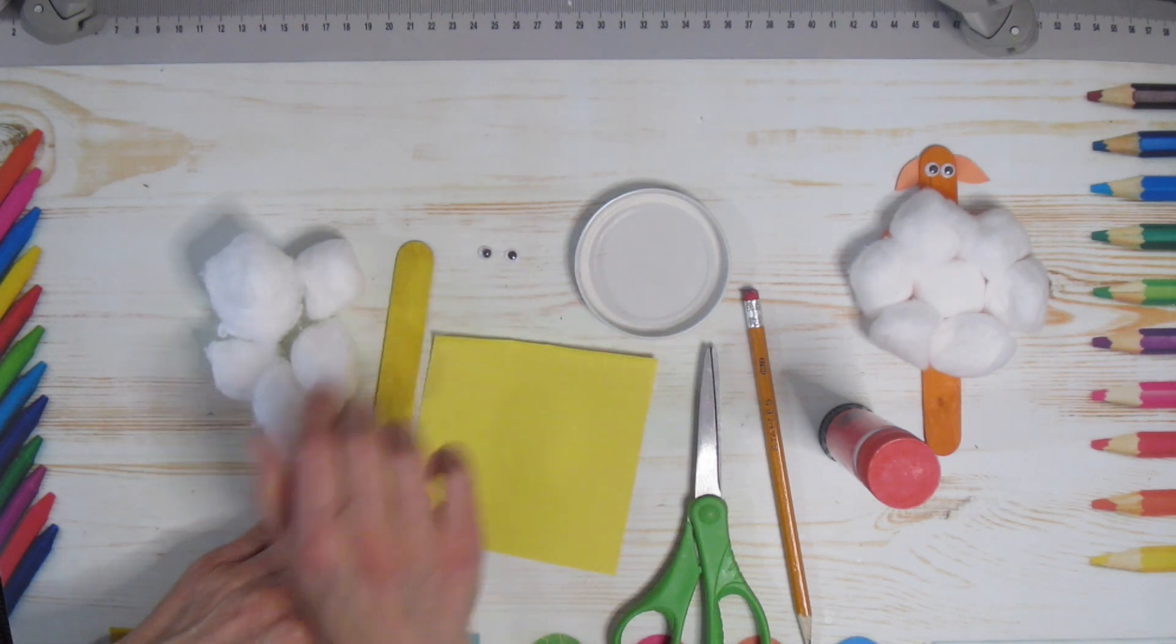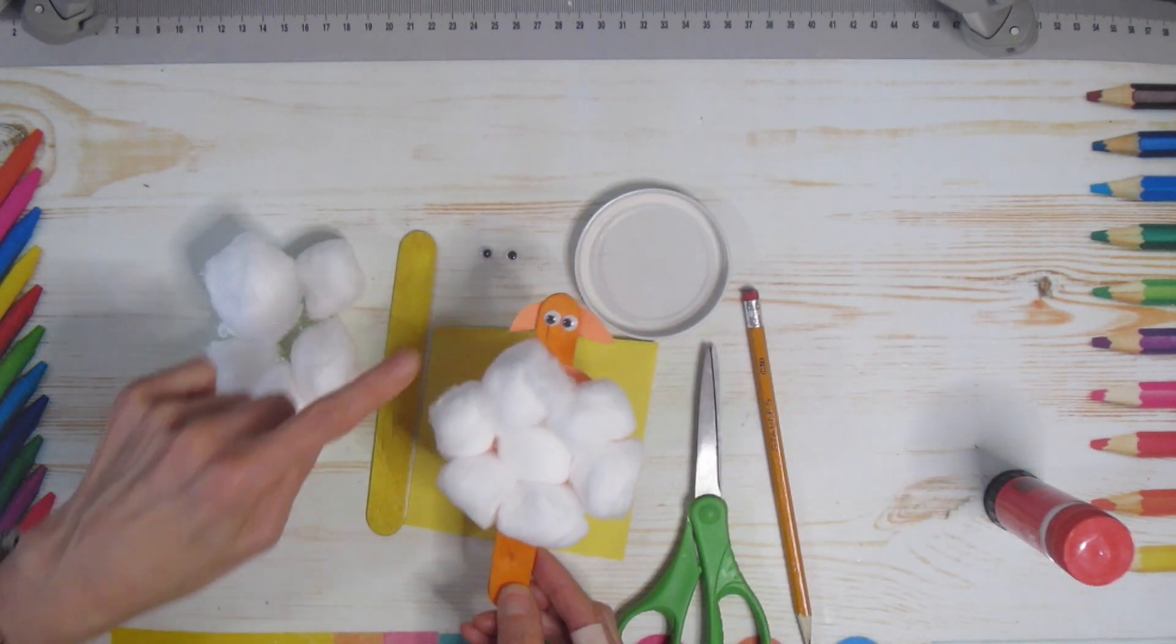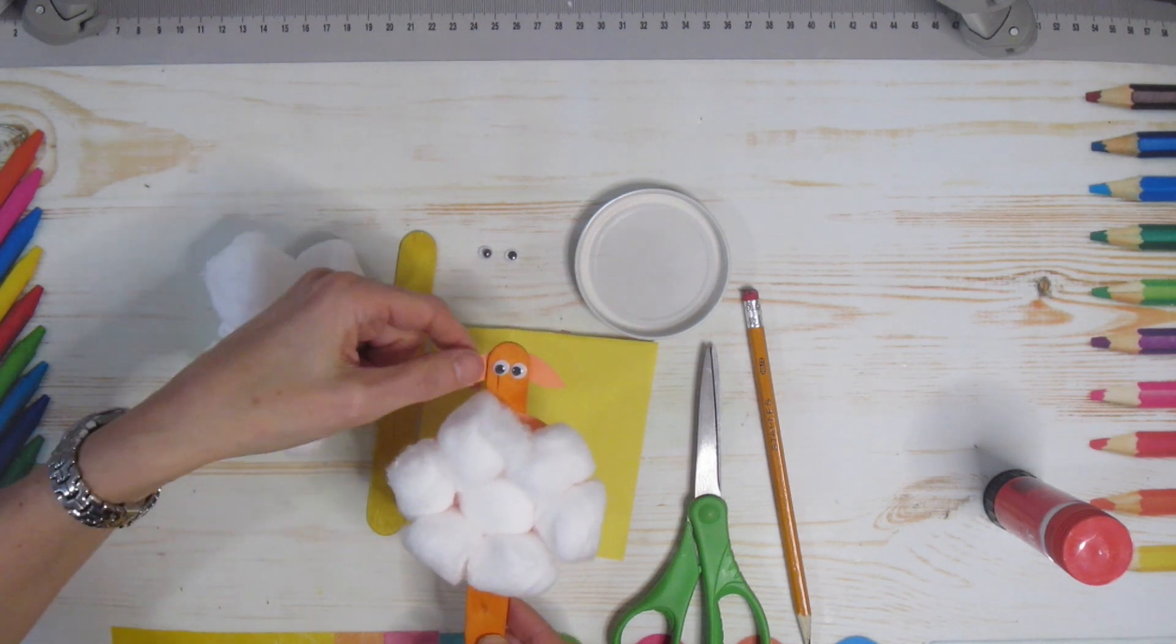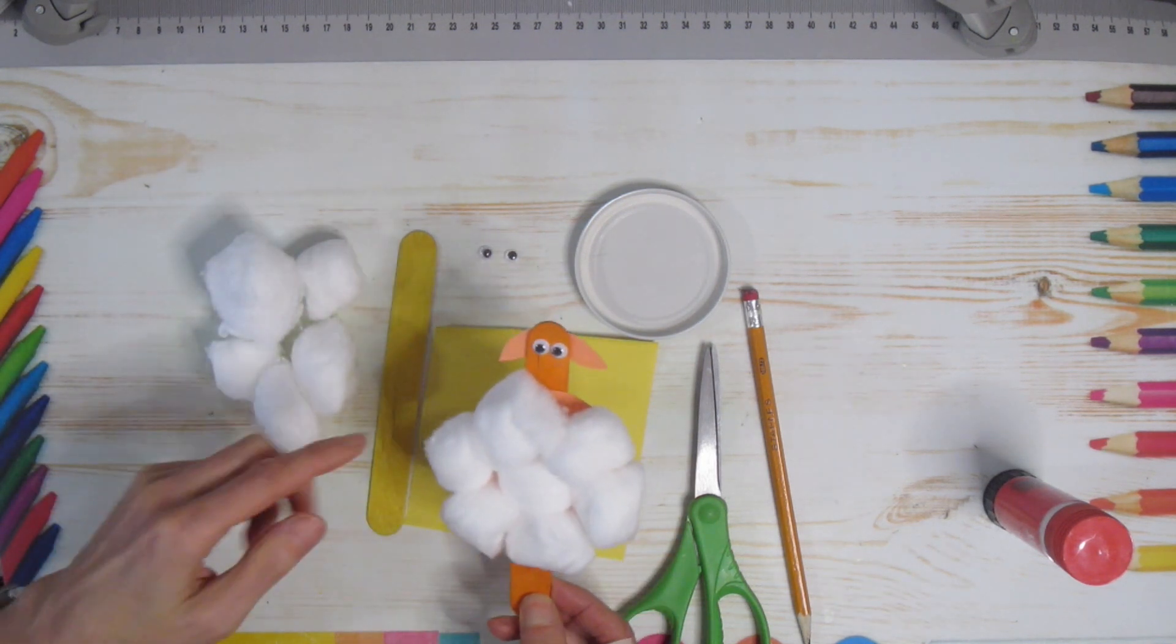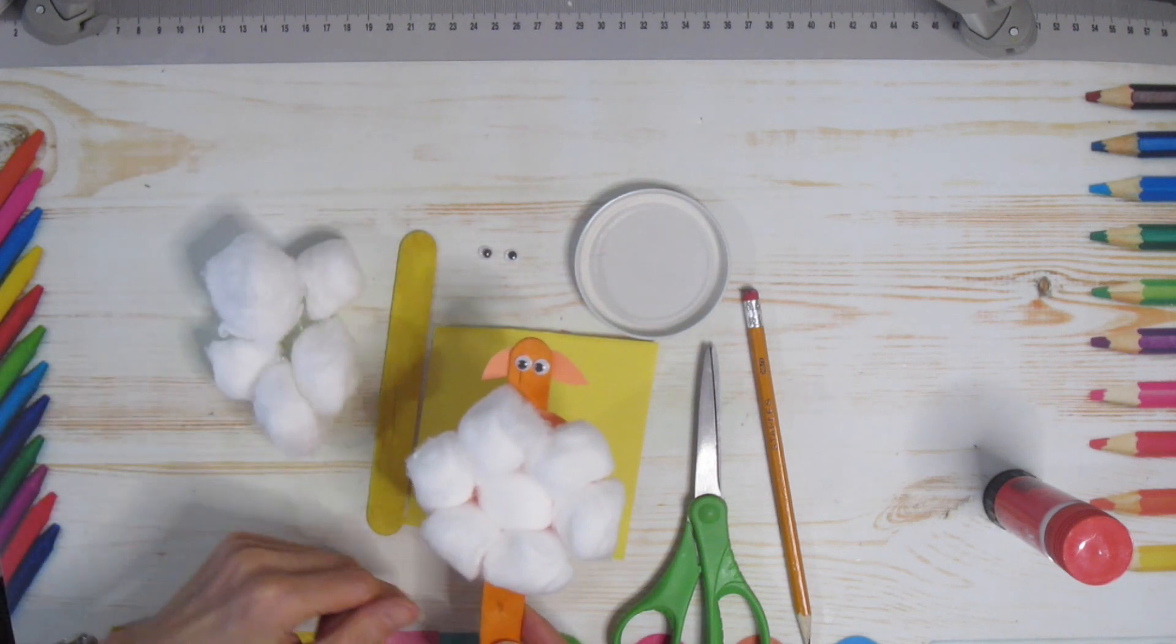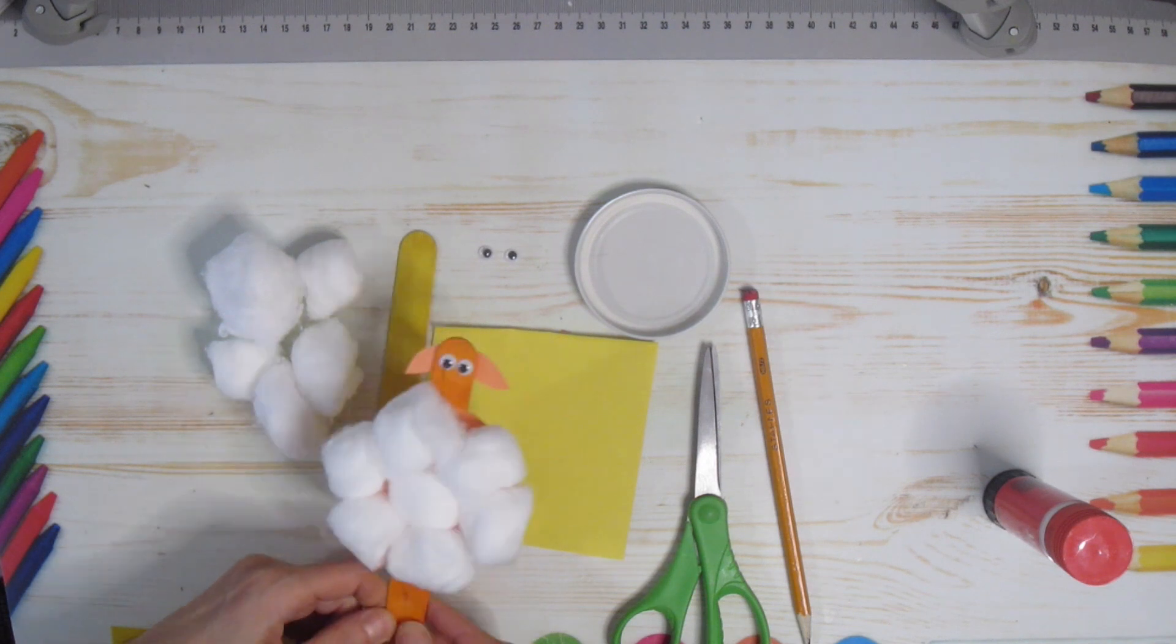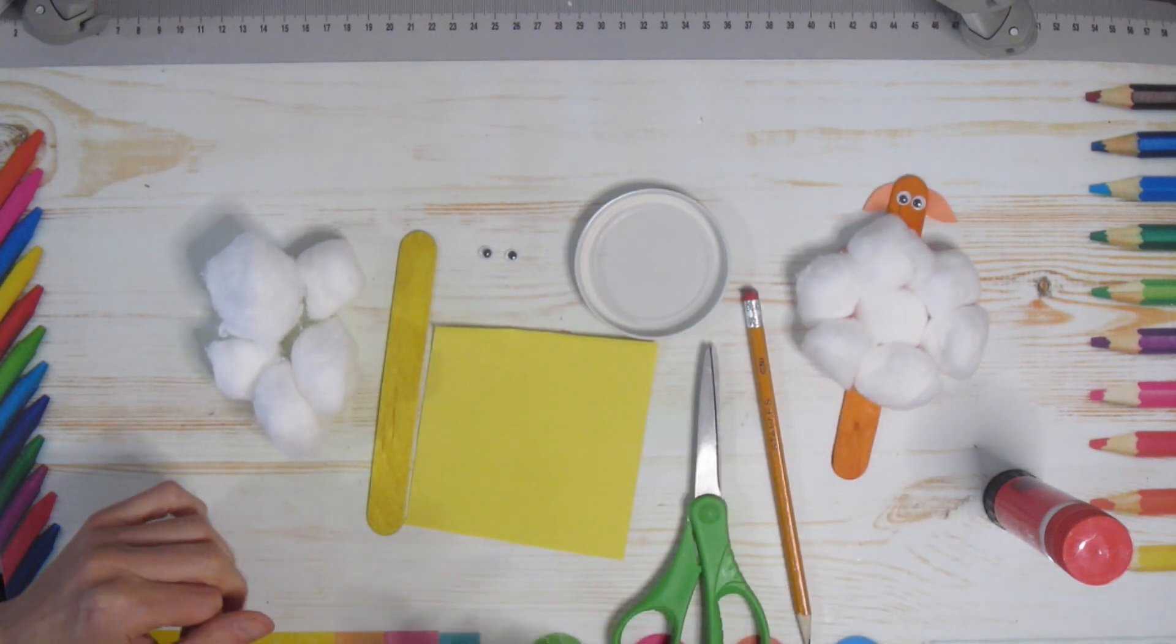I have some googly eyes but you could draw yours on and this is what I mean. So here I've used orange and then here I've used orange for my paper and orange for the background, but you could use any color. Here I've used googly eyes but you could just draw circles on if you wanted to, it's completely up to you. So grab what you can and what you have and let's get started.